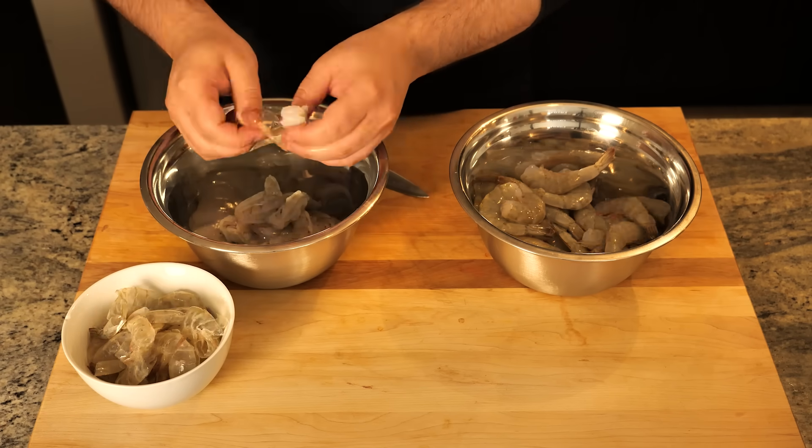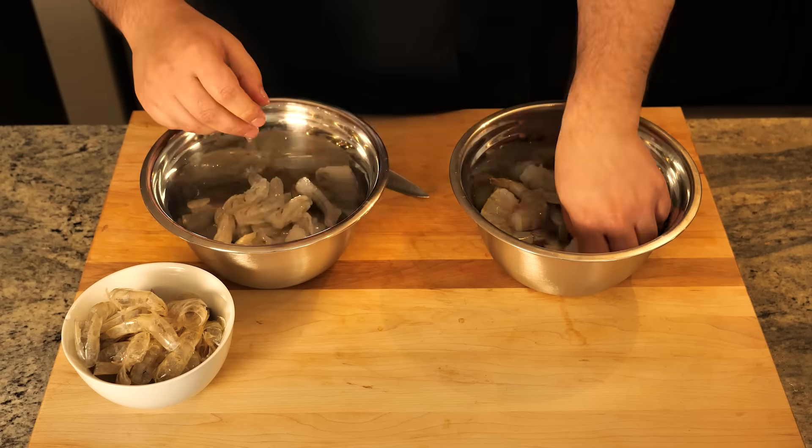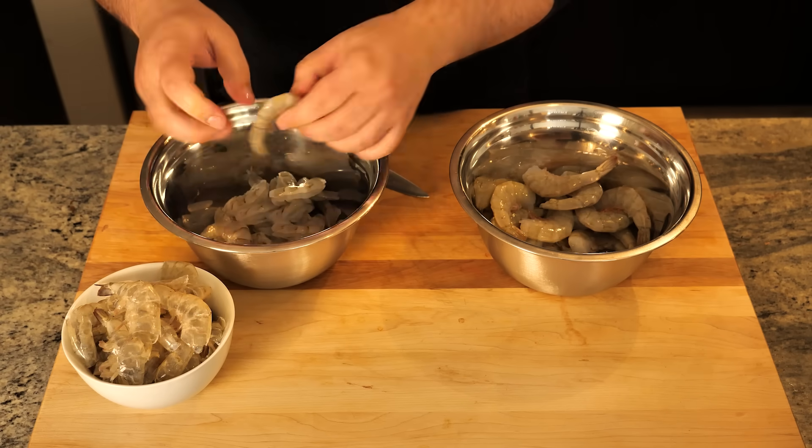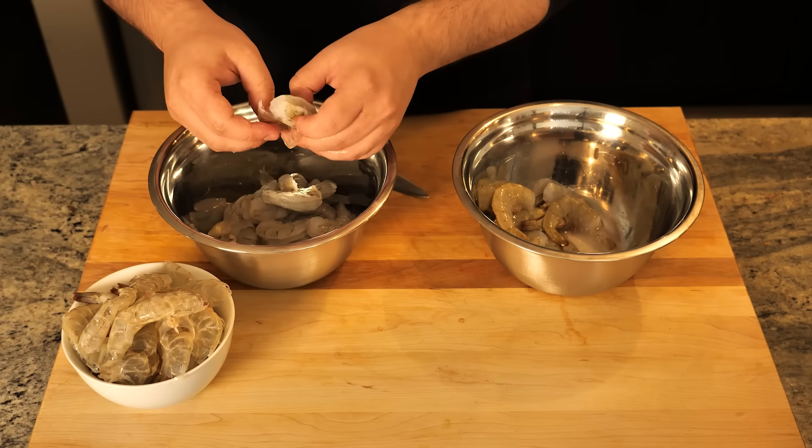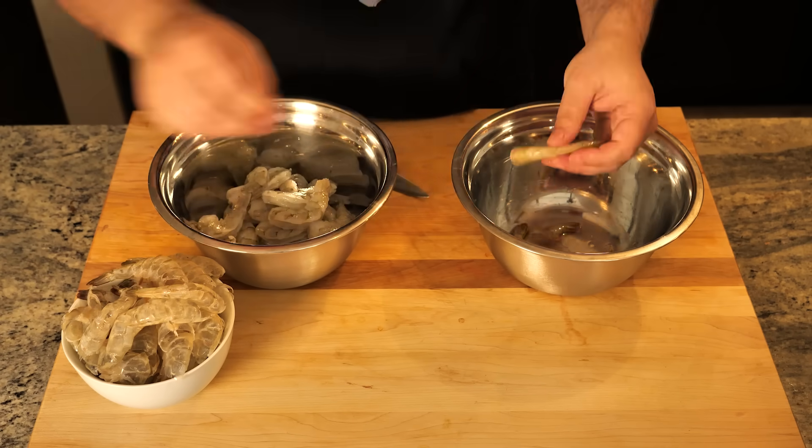The process is actually remarkably simple. First, we prepare the shrimp by removing the shells. These aren't garbage, we'll need them later. Then, we devein the shrimp, because nobody wants poop in their noodles.